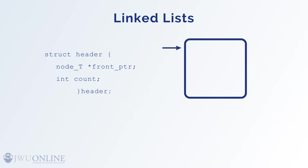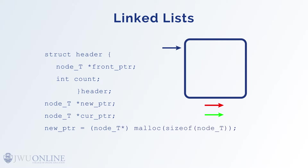I will create a pointer called new_pointer and another called current_pointer for use in the program: node_t *new_pointer; node_t *current_pointer; Now we can do the following: new_pointer = (node_t*) malloc(sizeof(node_t)); This creates the memory for the new memory baby and returns the pointer in new_pointer — nothing different than what we did before.